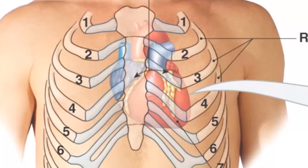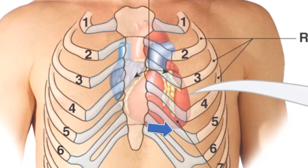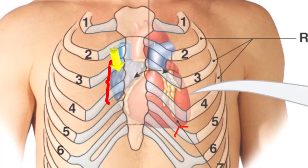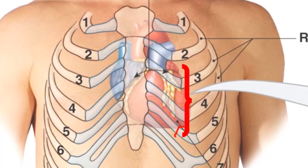In this diagram, we can notice that the heart lies behind the sternum and lies obliquely — meaning it is slanted to one side, pointed to the left. About one third of the heart is found on the right side of this individual, and the remaining two thirds are lodged towards the left part of the thorax.